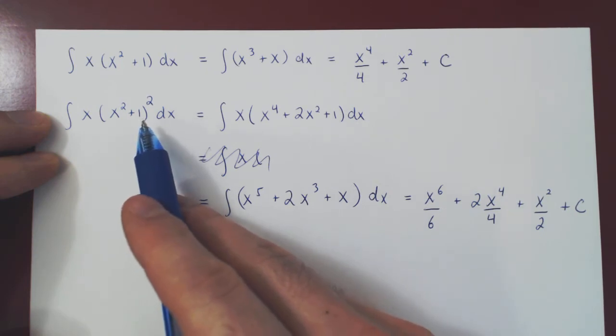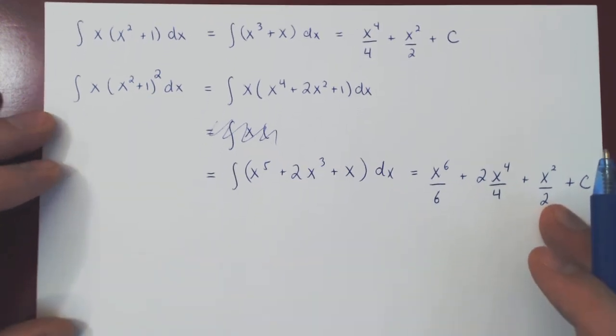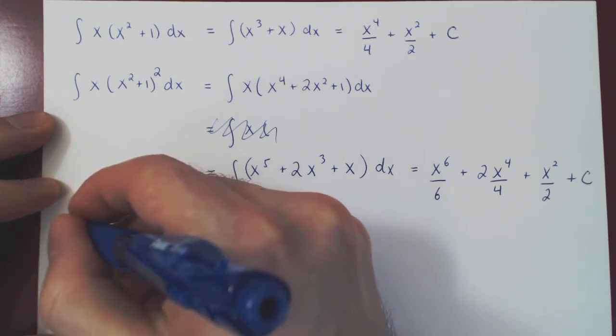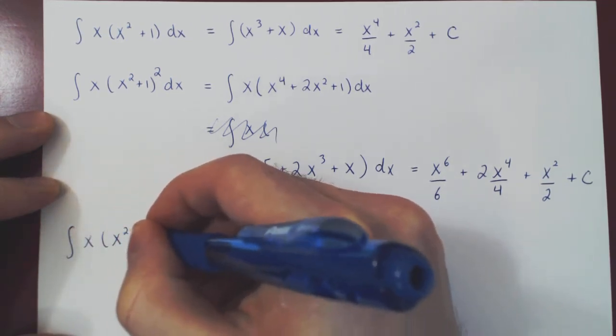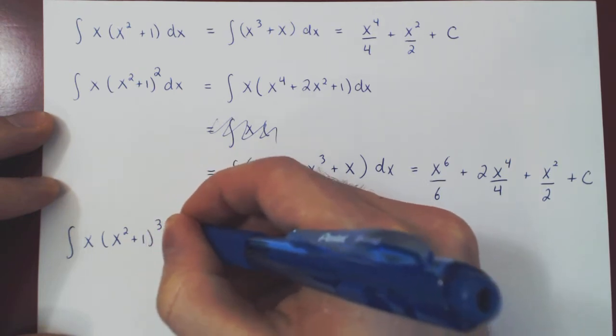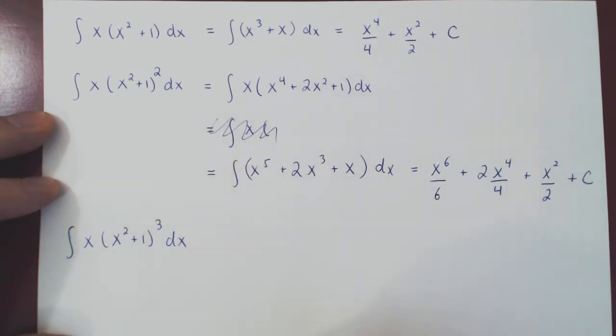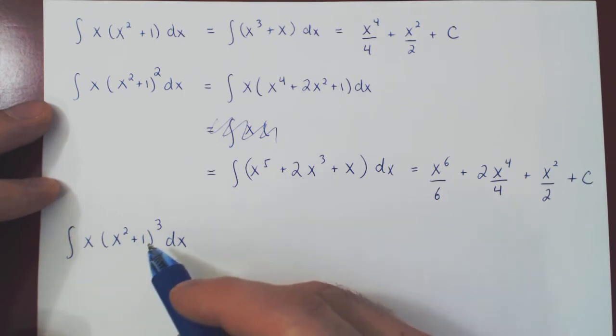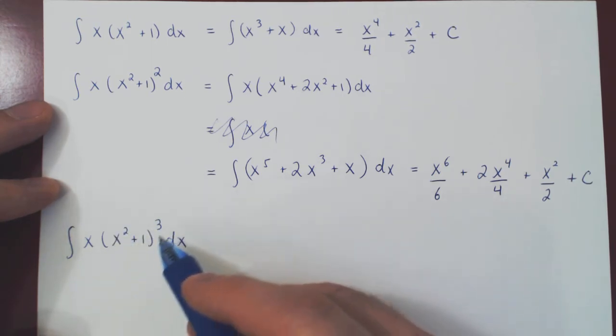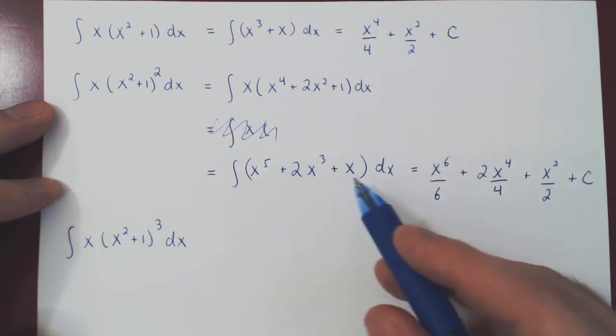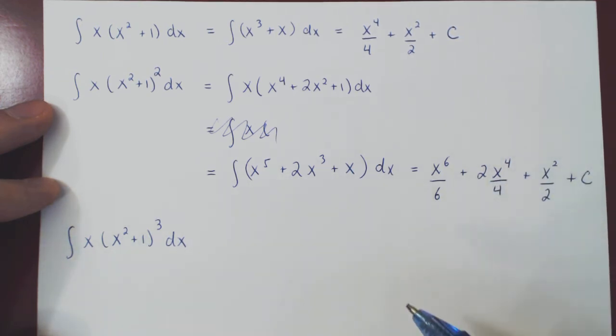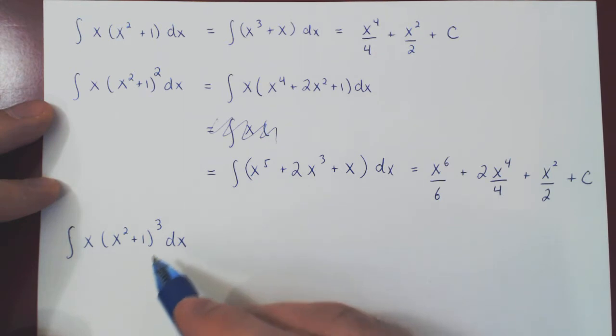Why not make it a little more interesting? Why not ask, can we integrate x times x squared plus 1 cubed dx? And you see where we're going with this. We'll have to cube this, then multiply by x, then we'll have a polynomial, then we can use the power rule. This will be a little more unpleasant.